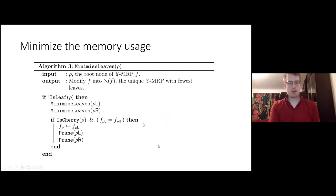We can also minimize the memory usage using this algorithm minimized leaves. It begins by saying if it's not a leaf, then call the function on the child nodes. Then it also checks. If it's a cherry and the values of the child nodes are the same, then you can prune those off and assign that value to the cherry node. After you prune them off, then you will have the cherry nodes carrying the same value.